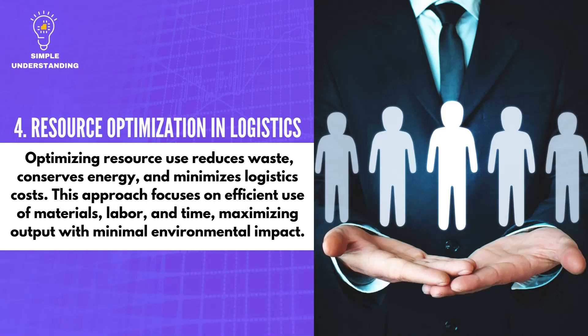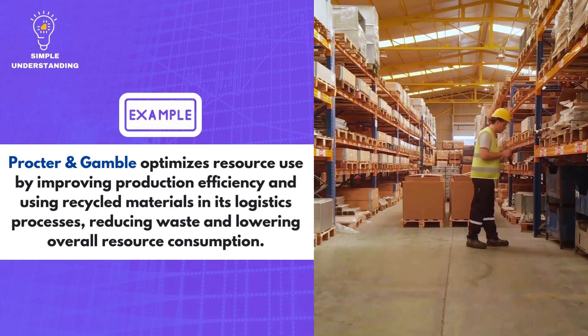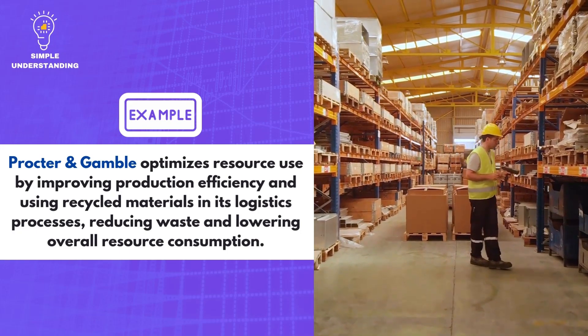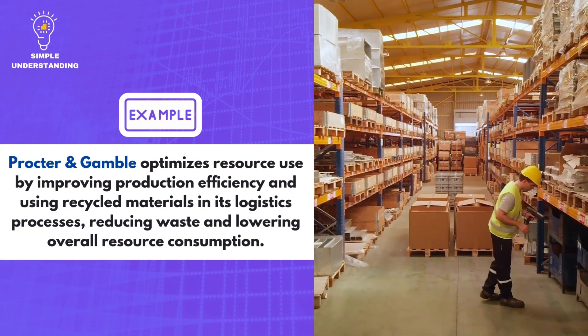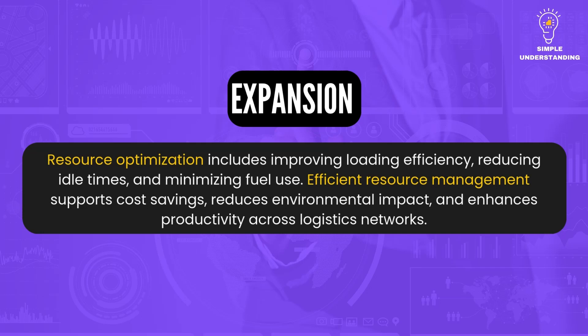4. Resource Optimization in Logistics. Optimizing resource use reduces waste, conserves energy, and minimizes logistics costs. This approach focuses on efficient use of materials, labor, and time, maximizing output with minimal environmental impact. Procter & Gamble optimizes resource use by improving production efficiency and using recycled materials in its logistics processes, reducing waste and lowering overall resource consumption. Resource optimization includes improving loading efficiency, reducing idle times, and minimizing fuel use, enhancing productivity across logistics networks.